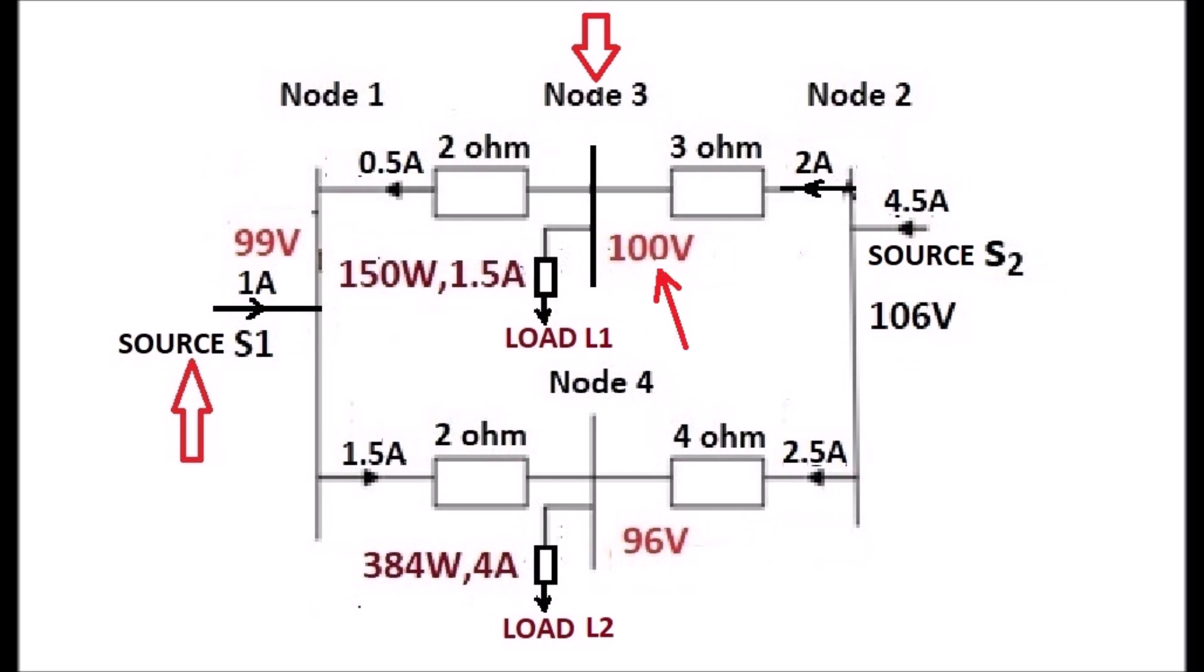More charges are coming from the source S2 to node 3, and extra charges are transferred to node 1, which contribute 0.5 ampere from node 3 to node 1.